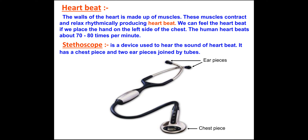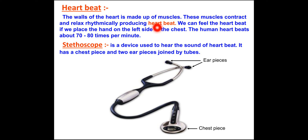Today you are going to learn about the heartbeat. The walls of the heart are made up of muscles — the heart is a muscular organ with no bone. These muscles contract and relax rhythmically, producing the heartbeat. So the heartbeat is produced by the contraction and relaxation of the muscles of the heart. We can feel the heartbeat if we place our hand on the left side of the chest.